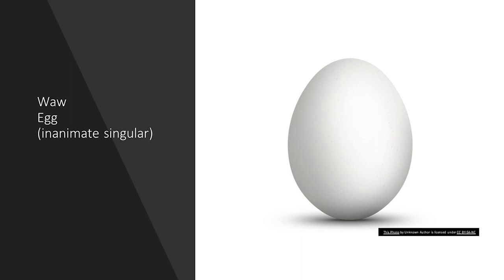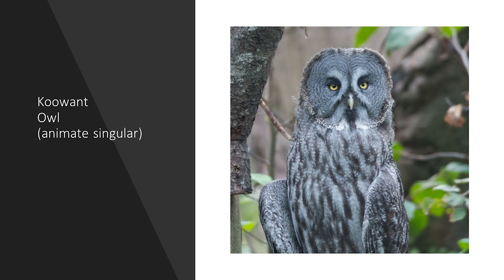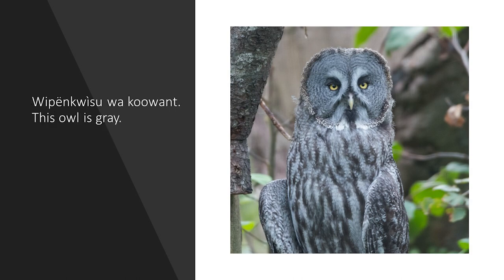Waw — egg, inanimate singular. Create a sentence saying: This egg is white. Answer: wapeyo yo waw — this egg is white. Kowant — owl, animate singular. Create a sentence saying: This owl is gray. Answer: wipankwisul wa kowant — this owl is gray.